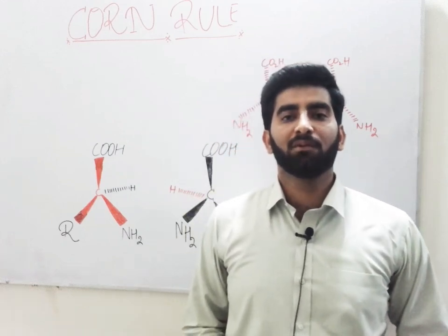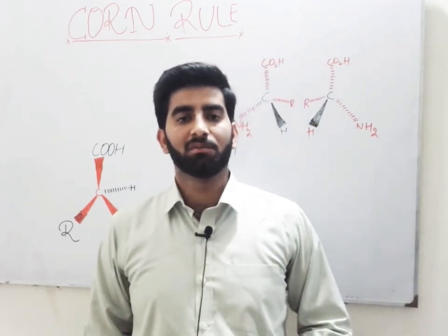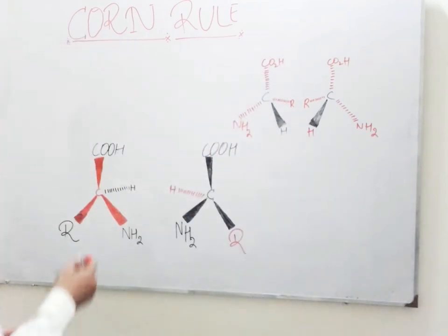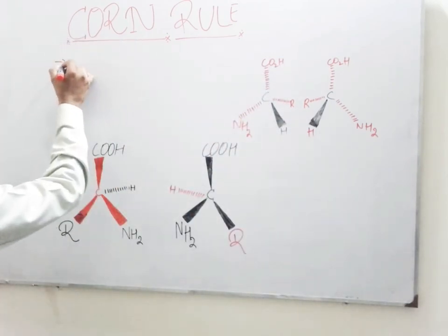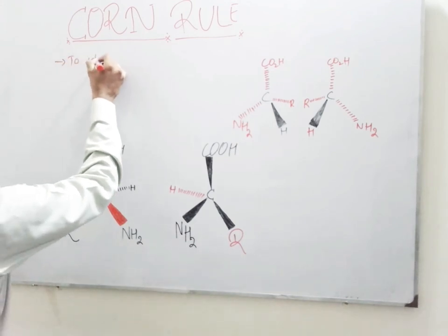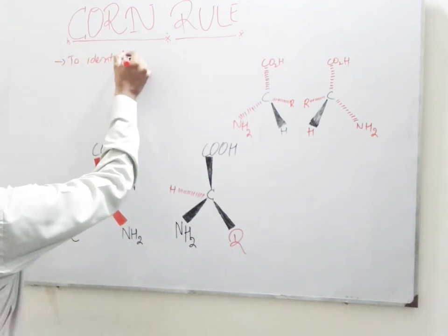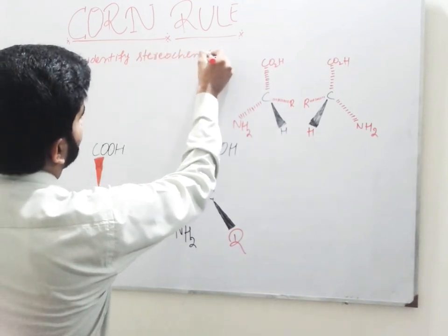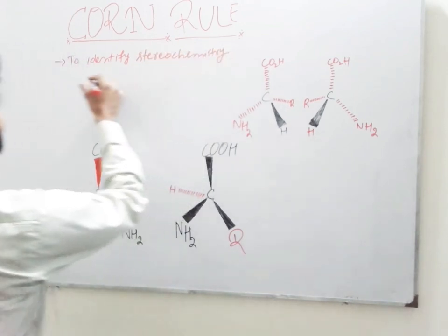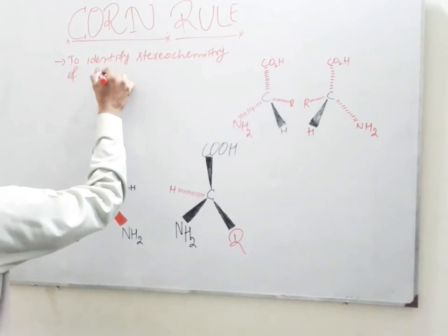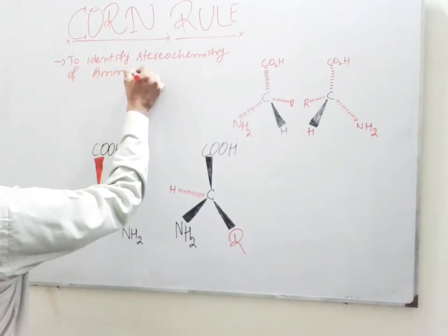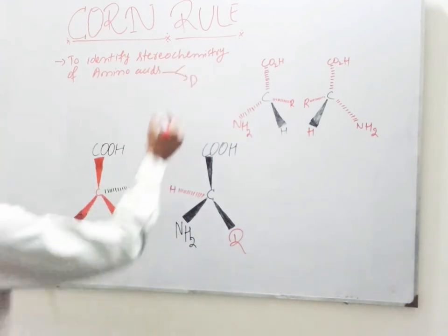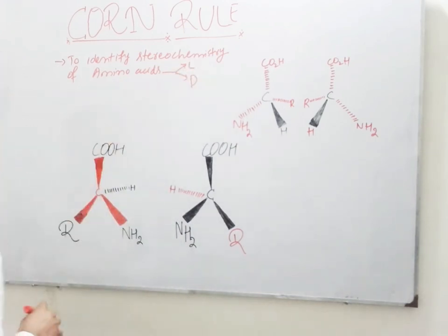As-salamu alaykum guys, I am Dhanapur, and today we will discuss about the CON rule. The CON rule is used to identify the stereochemistry of amino acids and assigning them D configuration or L configuration.